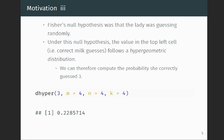And the key thing and the reason why Fisher designed the experiment the way he did is that under the null hypothesis, the value in the top left cell, so in other words, the correct milk guesses, that value actually follows a hypergeometric distribution. And so we can actually compute the probability of correctly guessing three for that particular top left cell. You can use the definition of hypergeometric with all of the binomial coefficients, but we're just going to use the dhyper function in R.